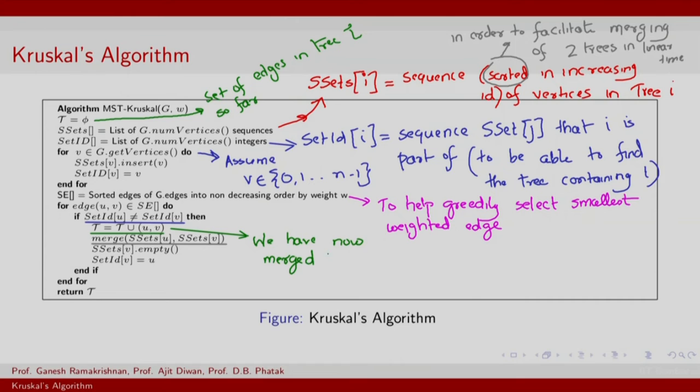We have now merged the tree corresponding to S set v into S sets u. We reflect this in the update for t and we also explicitly update our tree data structure itself, our forest data structure in the next step. Explicitly update the forest data structure which means you also have to empty v. S sets v has been merged into u.